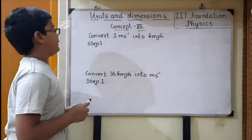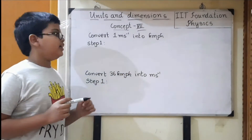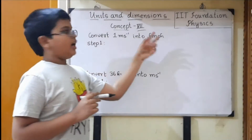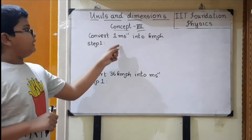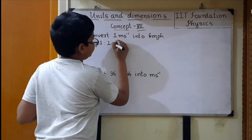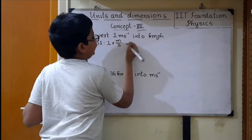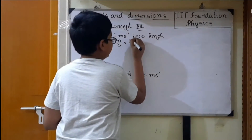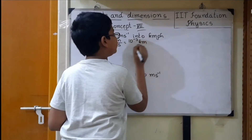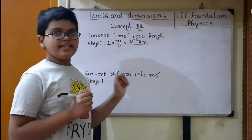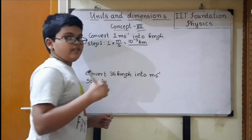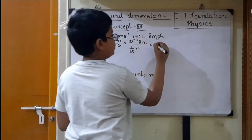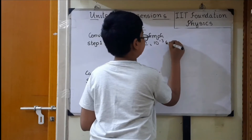Next, we will convert some units for speed. Convert 1 meter per second into kilometer per hour. The SI unit for speed is meter per second, so they have given us to convert the SI unit into another unit, which is kilometer per hour. 1 meter per second can be written as 1 into meter divided by second. 1 meter equals 10 power minus 3 kilometers, divided by 1 second. 1 second equals 1 by 60 minutes.